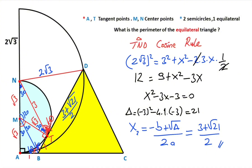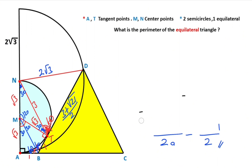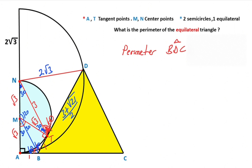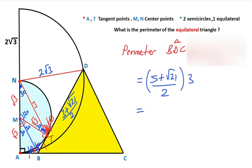Therefore, if we multiply x by 3 to get one full side of the equilateral triangle, the perimeter of triangle BDC equals 3 times (3 plus √21) over 2, which equals (15 plus 3√21) over 2. So the perimeter of the triangle BDC is (15 + 3√21) / 2.